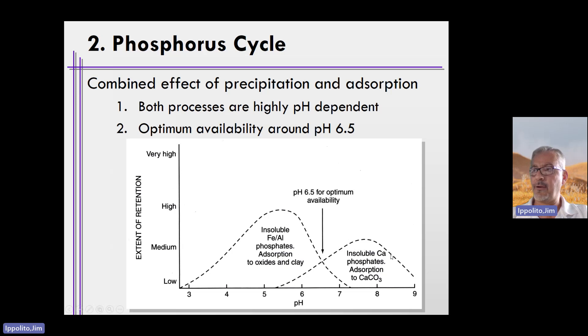At high pH values, like around pH 8, insoluble calcium phosphate mineral phases occur, as well as adsorption to the surfaces of calcium carbonate, where phosphate replaces carbonate and forms calcium phosphate mineral precipitates on the surface. Where both of these curves intersect is where the extent of phosphorus retention in almost any given soil is rather low, meaning the available phosphorus for plants is rather high. That target is right around pH 6.5, give or take.